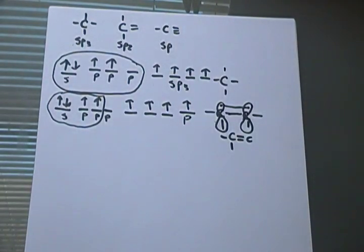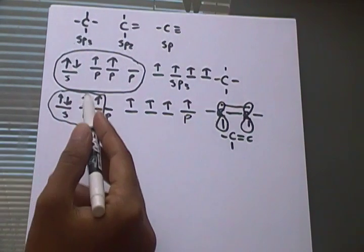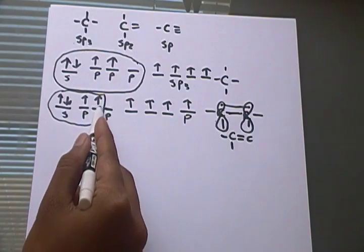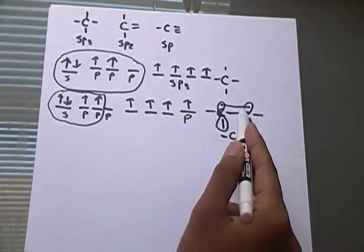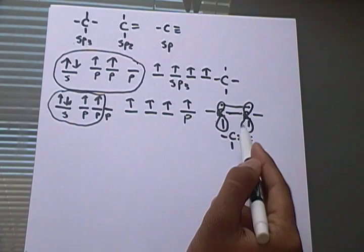I hope that gives you some intuition on why it's referred to as SP2. One S, two P orbitals come together to form this, which can be represented like that.